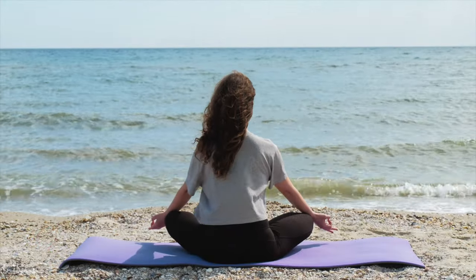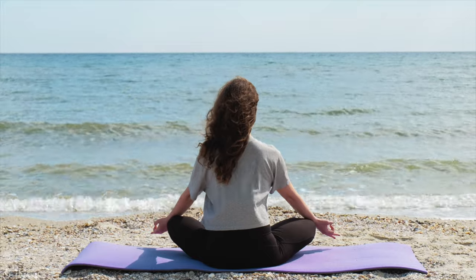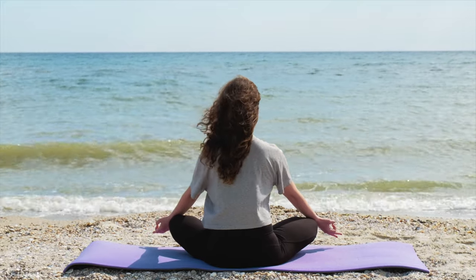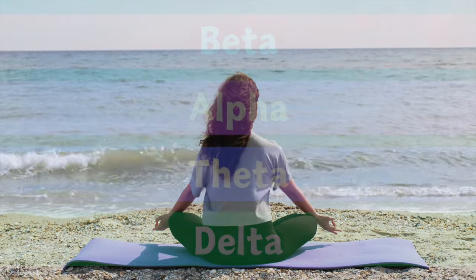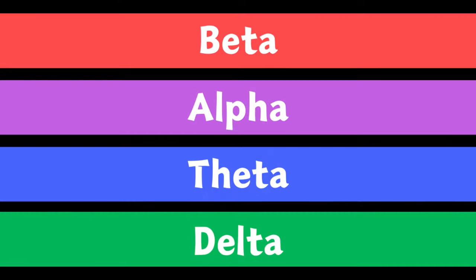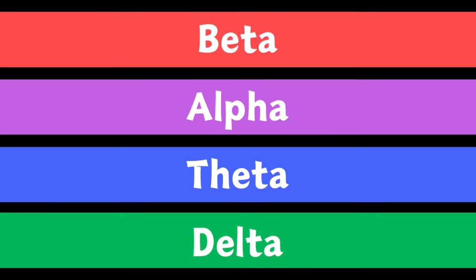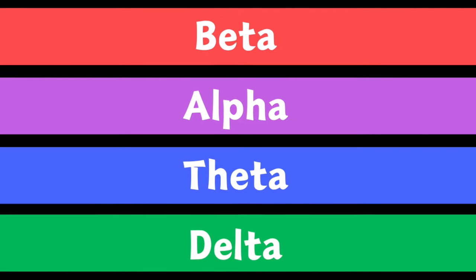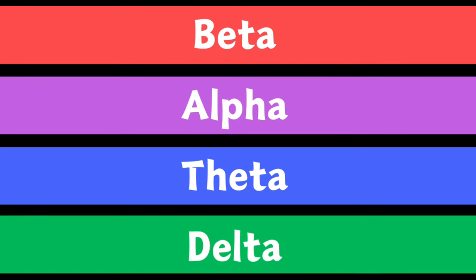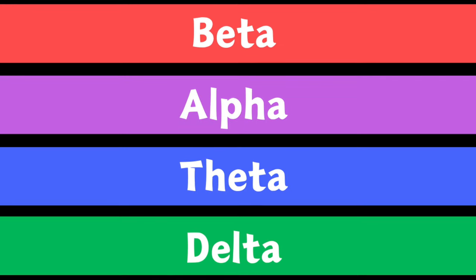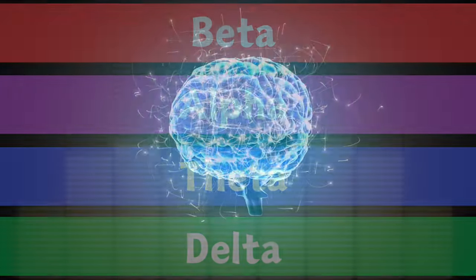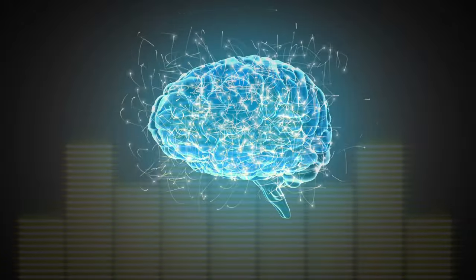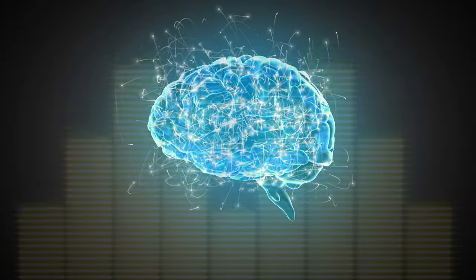If you are new to meditation, it is helpful to understand the different states of consciousness. You have probably heard of the terms alpha, beta, theta, and delta, which refer to different brainwave frequencies associated with the various states of consciousness.